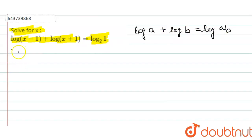So I am applying that property over here to become log[(x - 1)(x + 1)] = log₂(1).